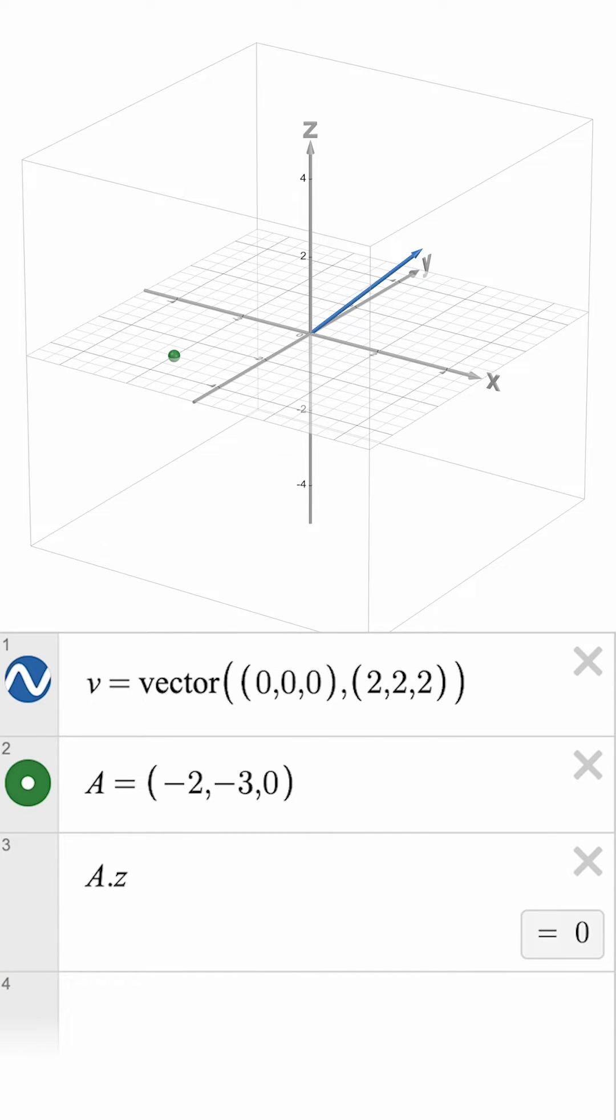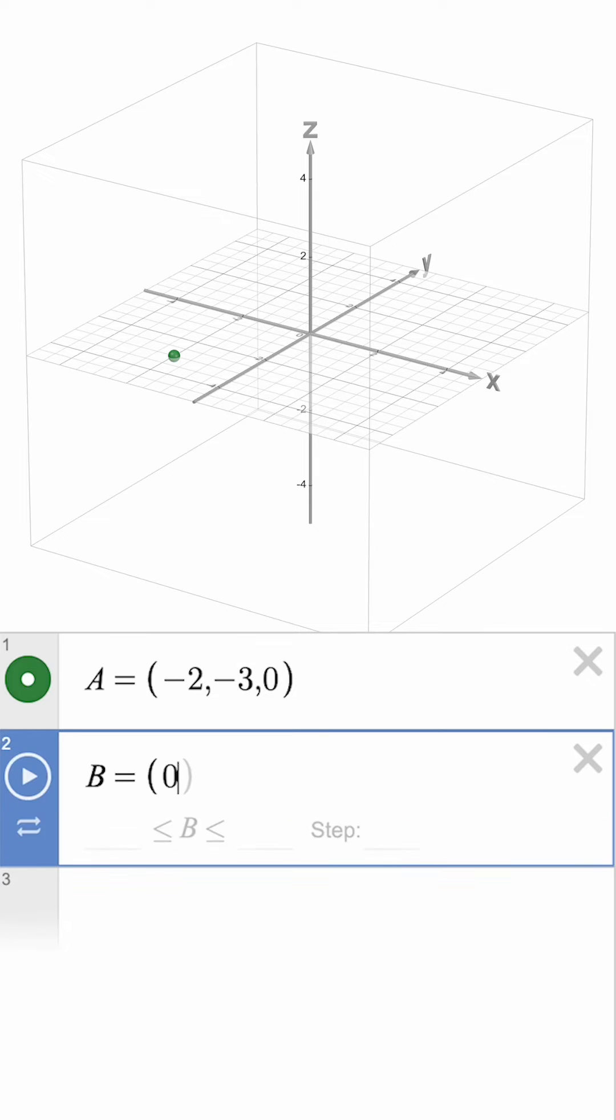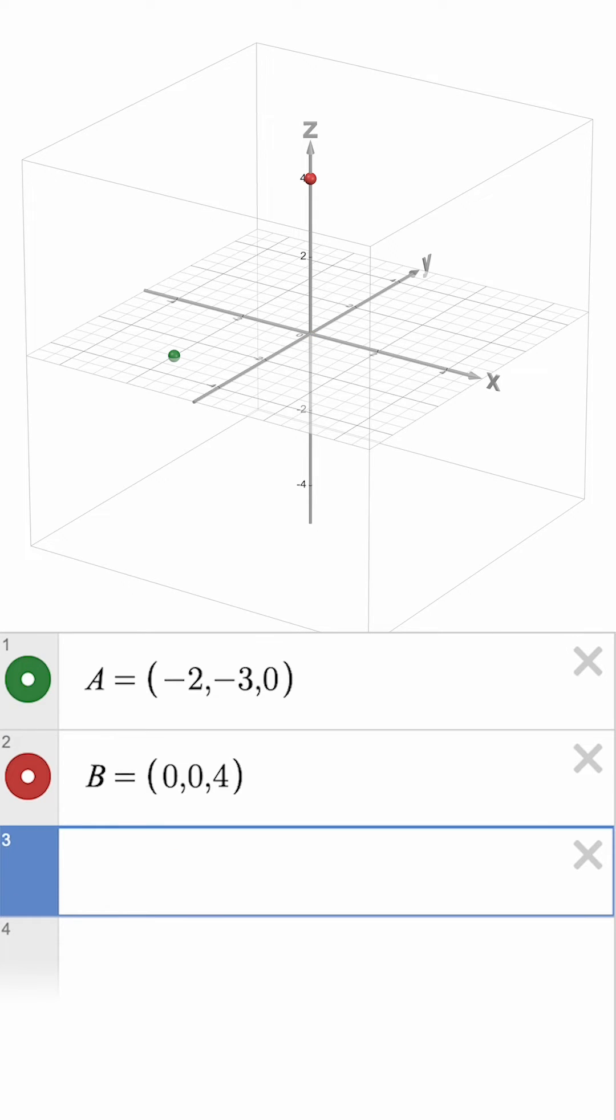To put this all together, let's create another vector. If we set B equal to 0 0 4, then we can name a vector v equals vector of A B.